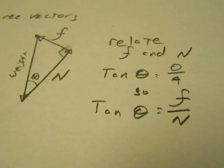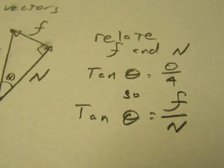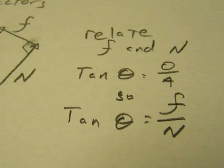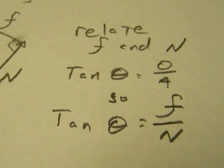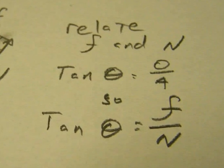We can relate the frictional force and the normal force using SOHCAHTOA by looking at the tangent of the angle will be equal to opposite over adjacent. So, tangent of our angle equals frictional force divided by the normal force.